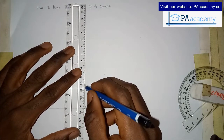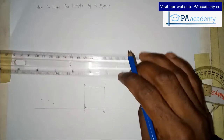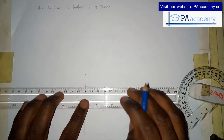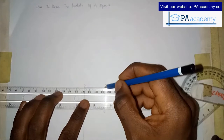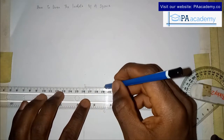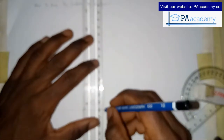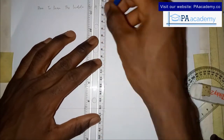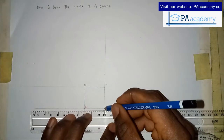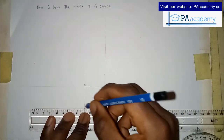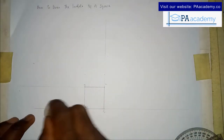Now let me extend the lines out from each corner — extending down from this point, extending to the left from this point, extending to the top here, and we already have this extended to the right. So I can clean this up now.